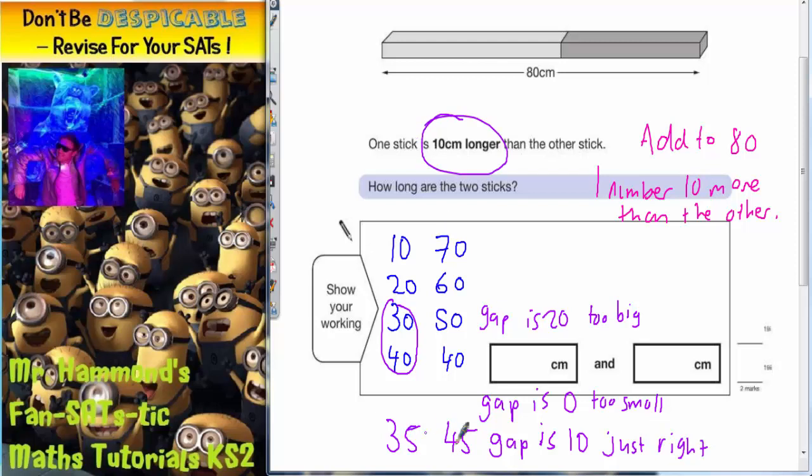So one is 10 centimetres longer than the other. So let's just double-check. Do both of the sticks add up to 80 centimetres? So if this one was 45 and this one was 35, does that make 80?